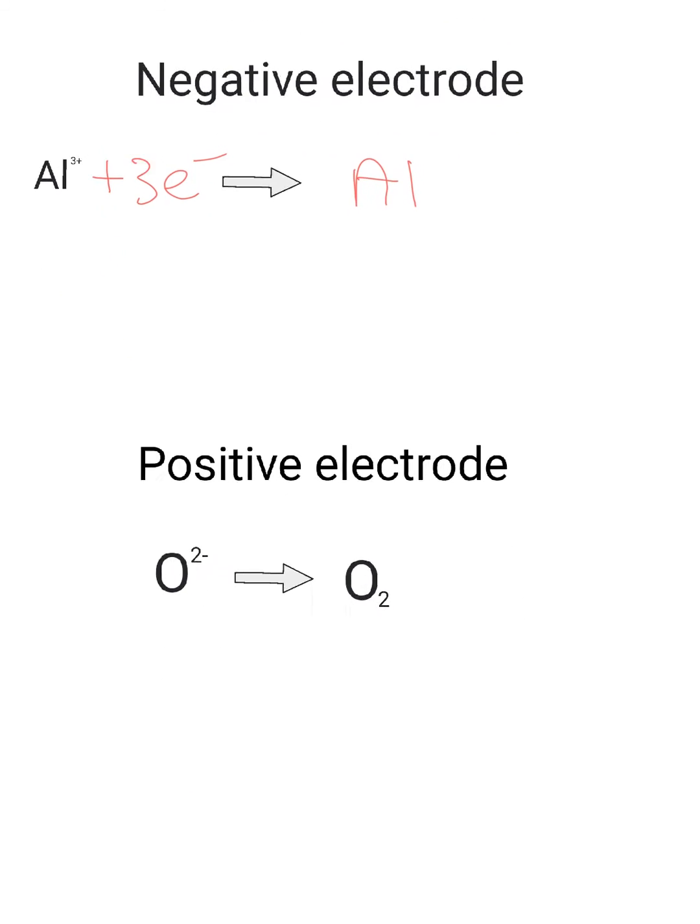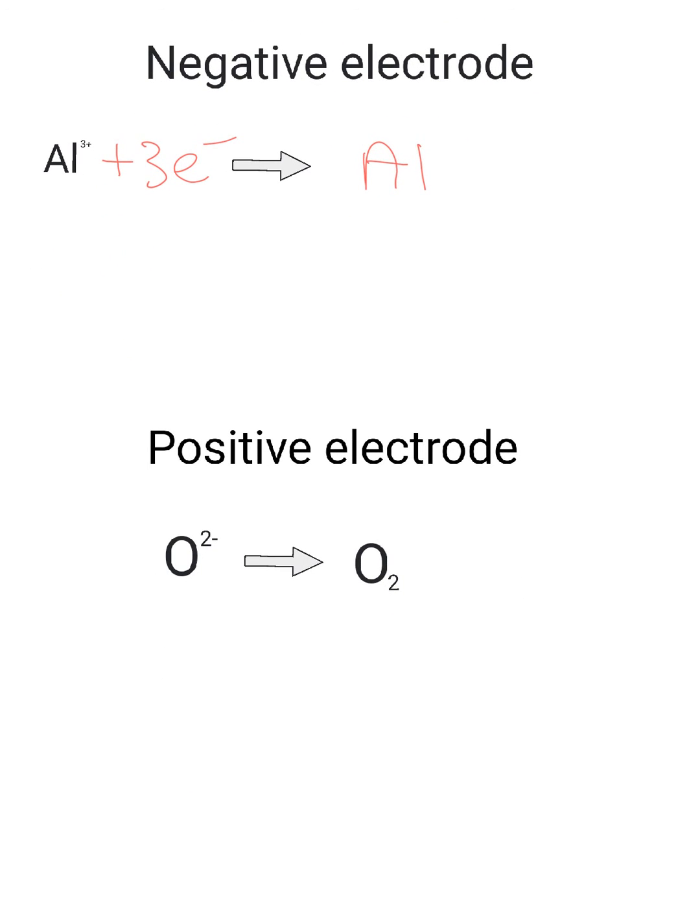At the positive electrode, we said that two oxide ions are pairing up. Because they're both losing two electrons each, in total four electrons have been lost, and we show that on the right-hand side. And that's pretty much it.